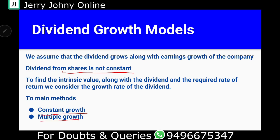Just to summarize: the dividend growth model came into existence because of certain limitations of the dividend capitalization model. The limitation is that we assumed dividend is constant. The intrinsic value calculation considers the required rate of return and the dividend growth rate. We have two main methods: the constant growth model, where dividend growth is at a constant rate, and the multiple growth model, where the dividend growth varies through the life of the company. In the next video, we will talk about the constant growth rate in detail.